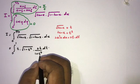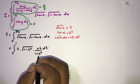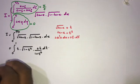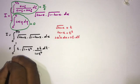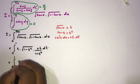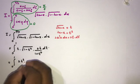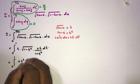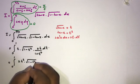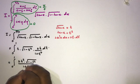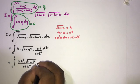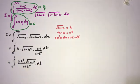Then we can write this integral as the integral from 0 to 1 of 2t² times square root of (1 minus t²) over (1 plus t⁴) dt.